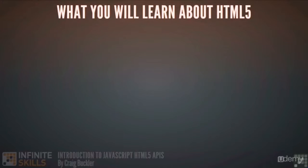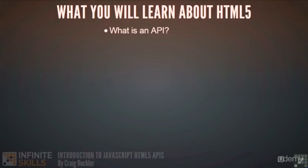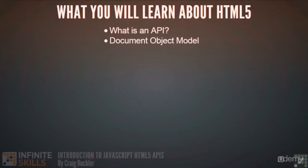We'll be looking at what HTML5 actually is — the technology itself and the term HTML5, which has been hijacked by large IT companies and the mainstream media to mean anything cool which happens in a browser. We discover what JavaScript APIs are and how you can use them. We delve into the document object model, which allows you to add, modify or remove any items on your web page.